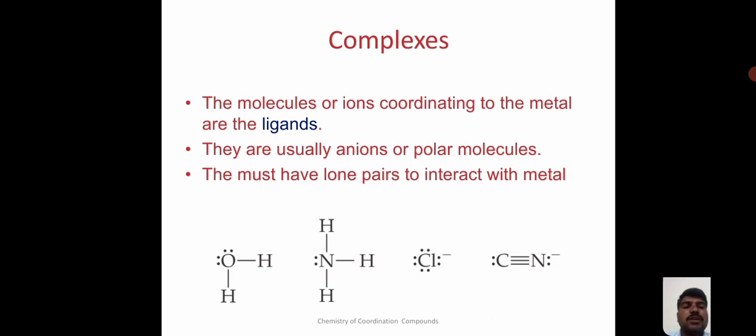These are the examples of ligands: water, ammonia, chlorine and cyanide. In water molecules, oxygen has a lone pair of electrons. In ammonia, nitrogen has a lone pair of electrons. In chlorine atom, chlorine has a lone pair of electrons. In cyanide, carbon and nitrogen both have a lone pair of electrons.